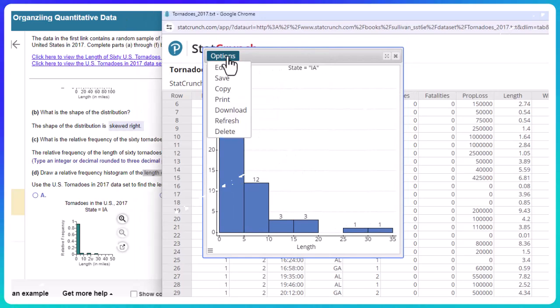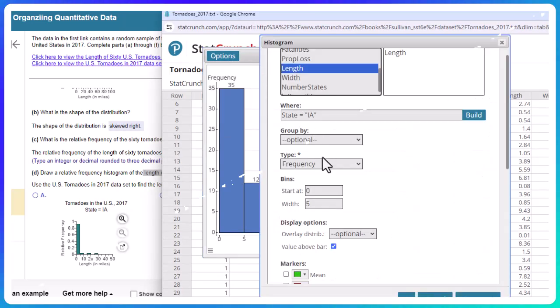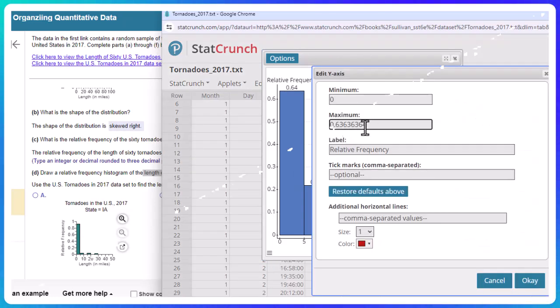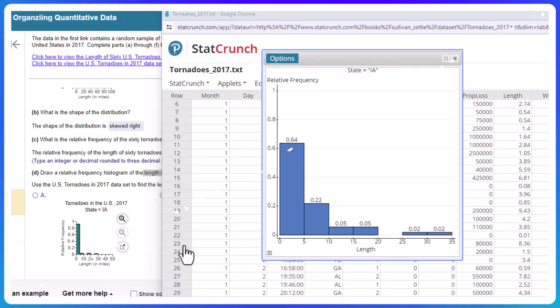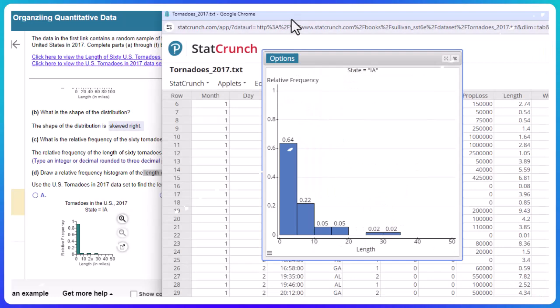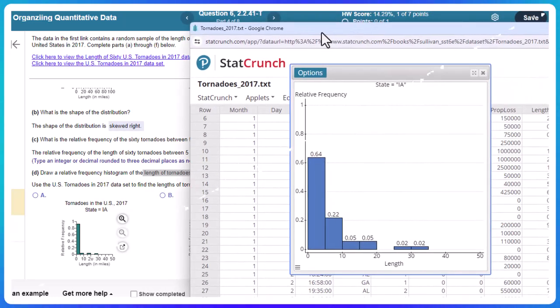Looks like I did it again. Let me go ahead and change this frequency to relative frequency. Okay. And again, they go up to one. So I'm going to go ahead and do that just to make this visually the same. Maximum here is one. And it looks like they all go out to 50. So I'm going to change that X axis to 50. You don't have to do that.